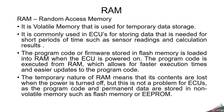RAM stands for random access memory. It is a type of volatile memory commonly used in ECUs for temporary data storage and execution of program code. RAM is used for program code execution, stack management, task scheduling and data buffering. The program code or firmware stored in flash memory is loaded into RAM when the ECU is powered on, which allows for faster execution times and easier updates.